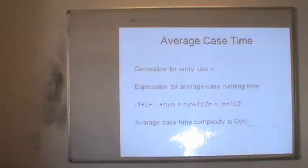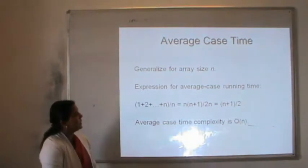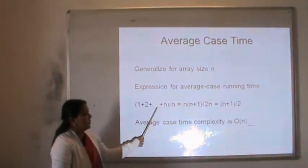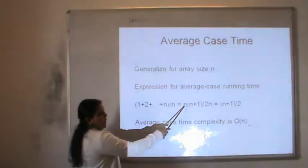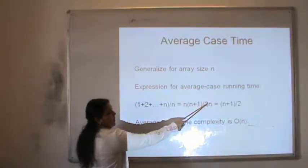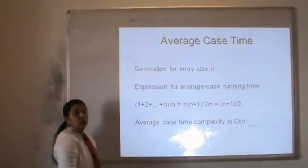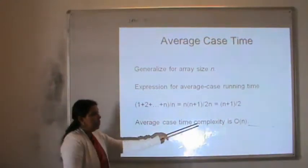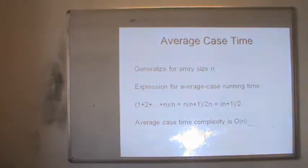Generalizing it, the average case running time of a linear search for n elements is (1 + 2 + ... + n) / n, which equals n(n+1)/2 divided by n, giving (n+1)/2. Therefore, the average case time complexity is also of the order of O(n). So the worst case and average case running time of a linear search algorithm are the same.